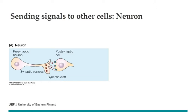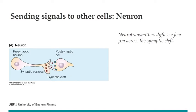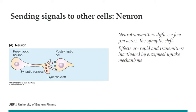We have different ways to send information to the next cells. First, we have neurons where neurotransmitters diffuse only five micrometers across the synaptic cleft, affecting the target practically immediately — perhaps a 10 millisecond interval — because the distance is so short. It also means the space is very limited, so if you have an enzyme there to cut the neurotransmitter into smaller pieces, you will get rid of it very fast.